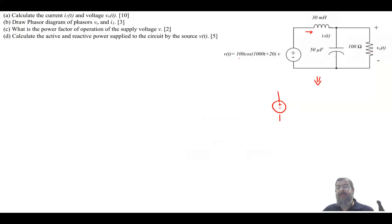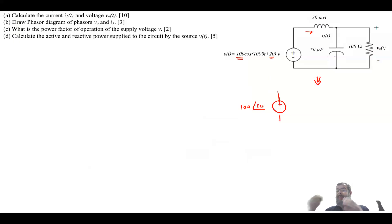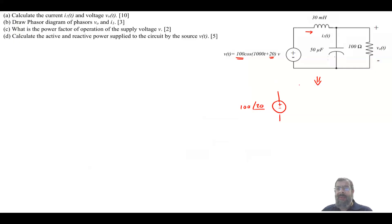What we do is convert the supply from a sinusoidal function into a phasor. We take the magnitude 100 and the angle 20, so the supply becomes a phasor with magnitude 100 and angle 20 degrees.